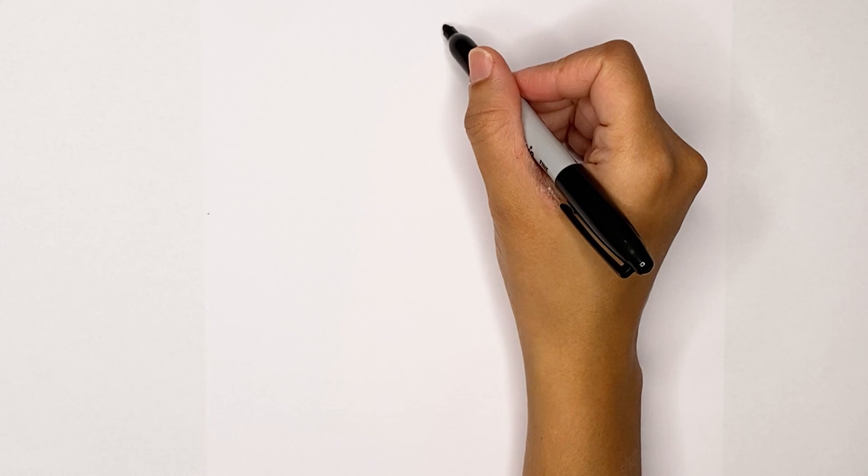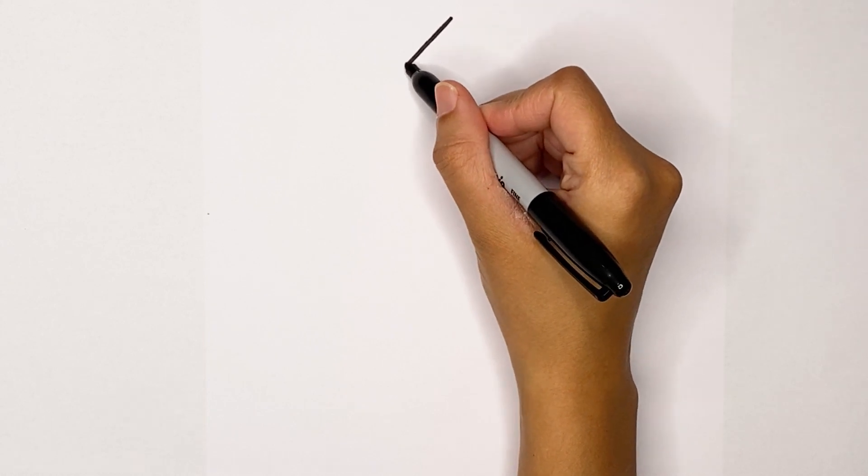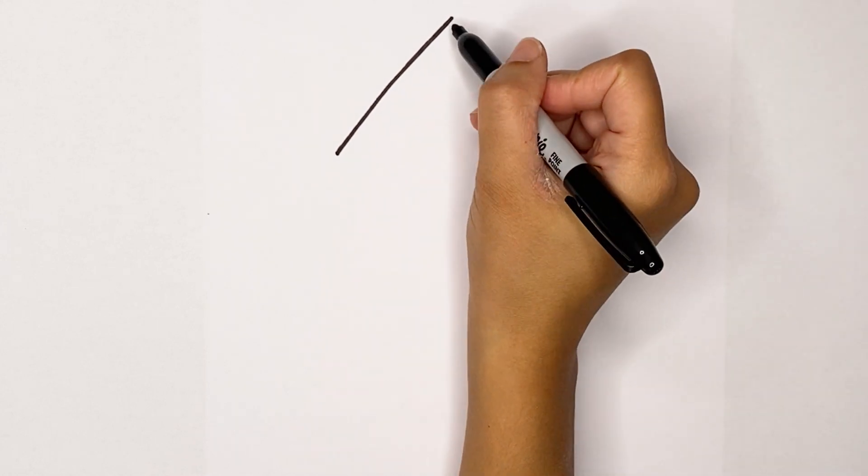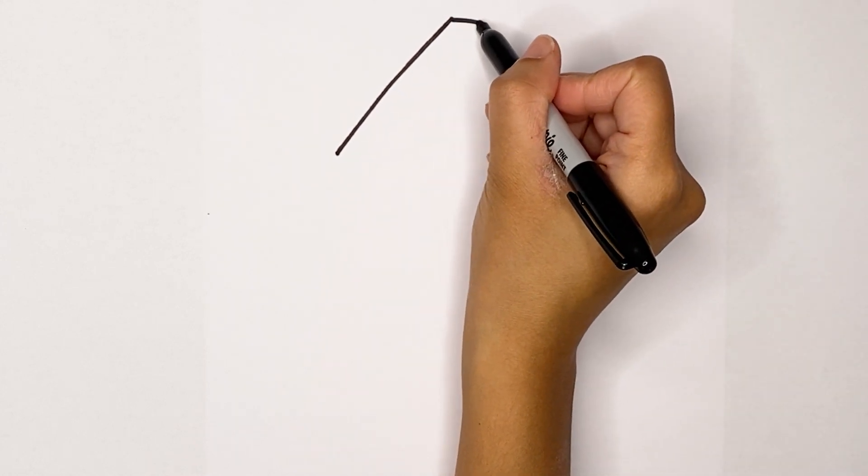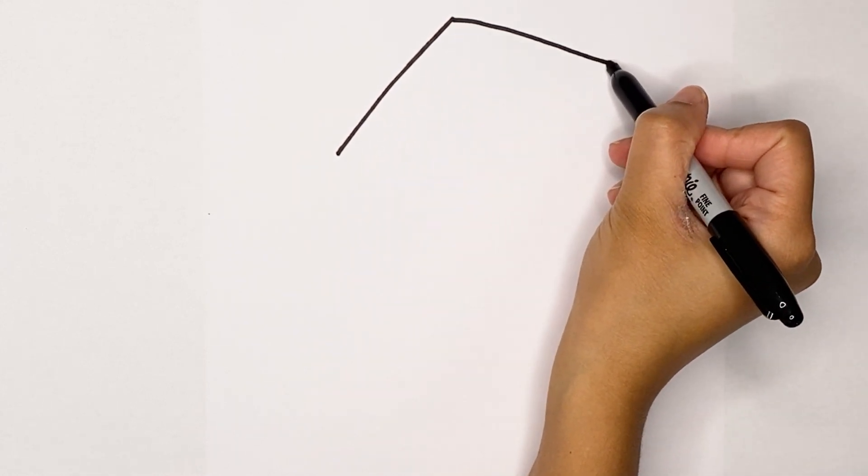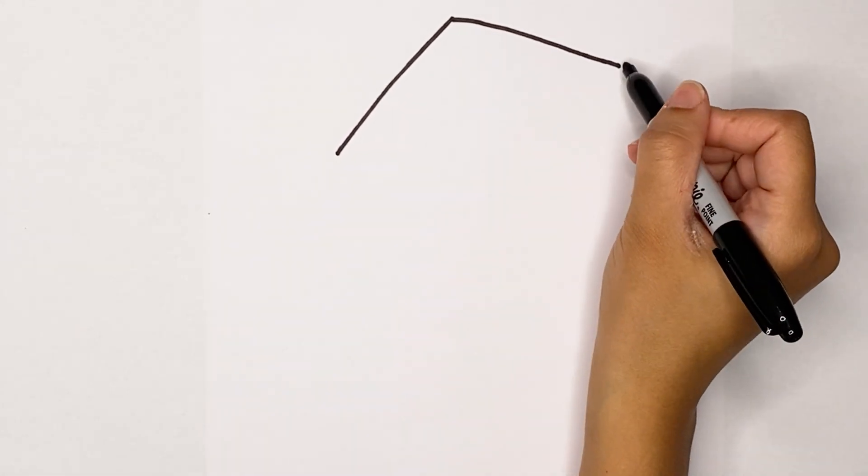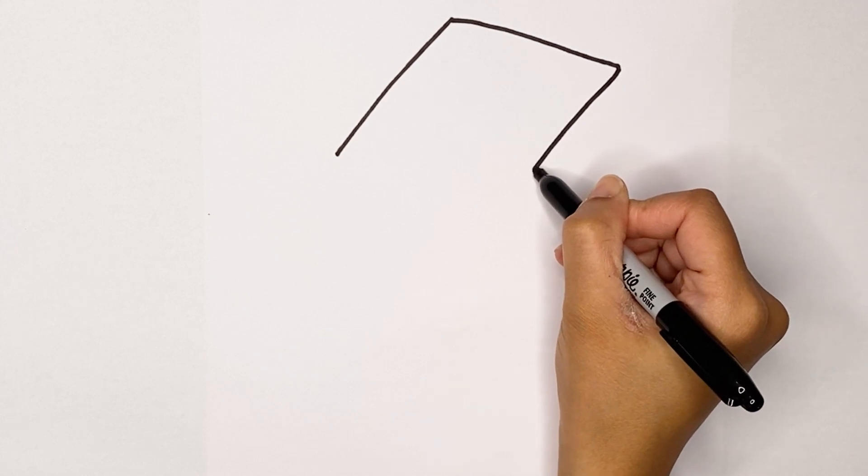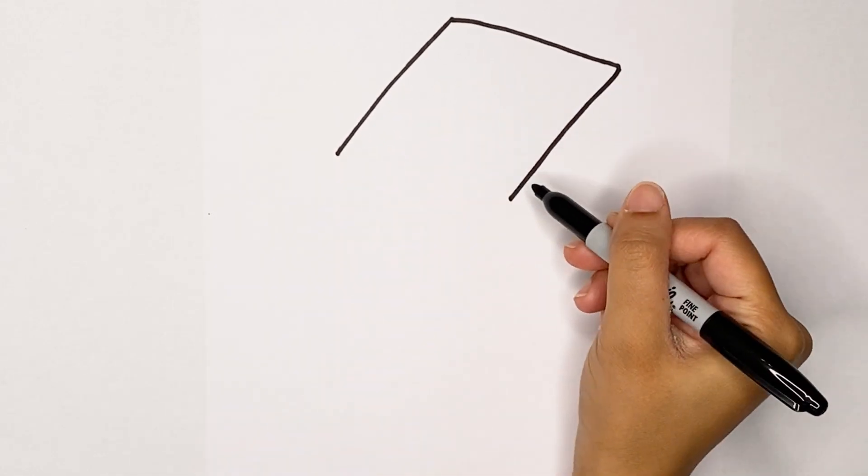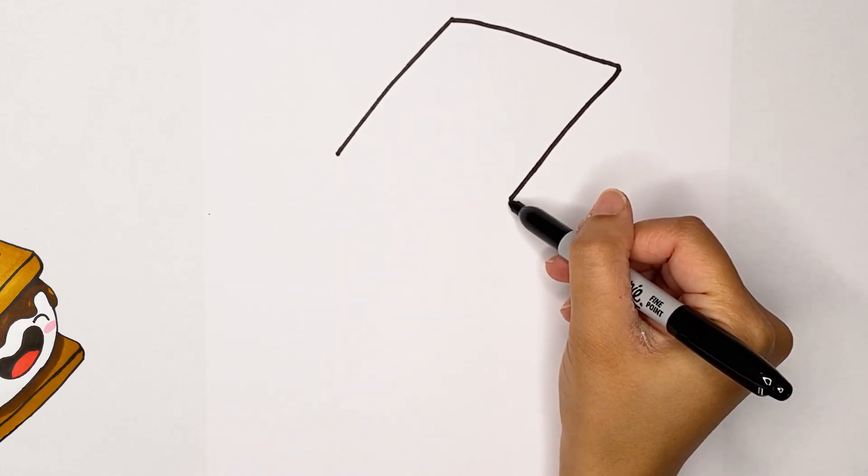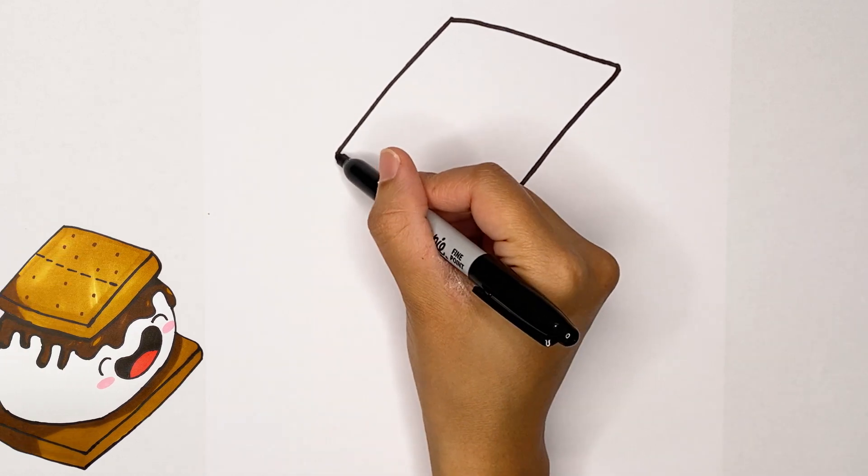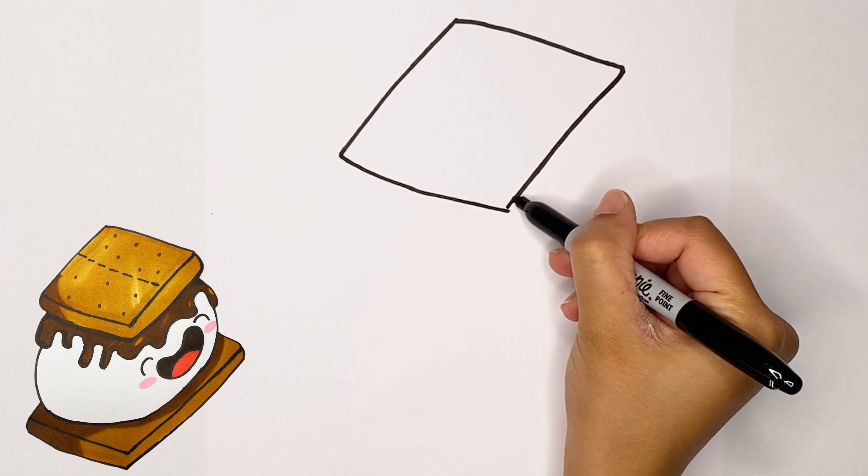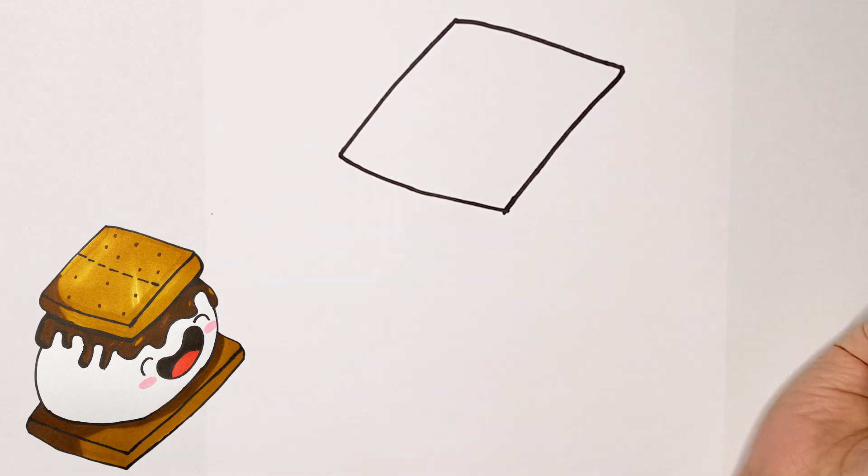First step, we're going to start at the top and then draw a line down and out. Now we're going to draw a line that goes out this way and stop. Now we're going to draw a line that goes down at an angle kind of like this one and stop again. Now we're going to connect these two lines and stop, make sure they connect. It kind of looks like a diamond.